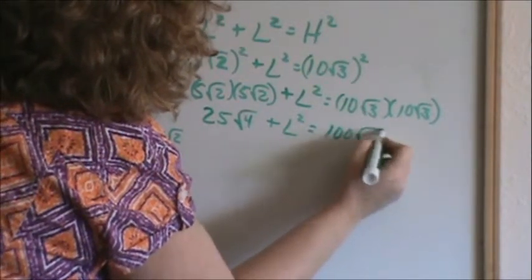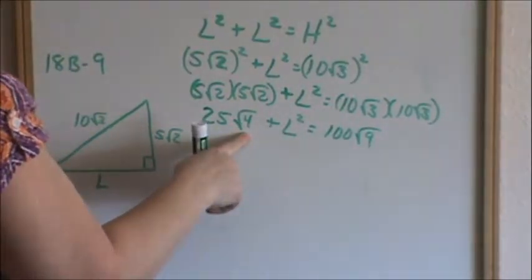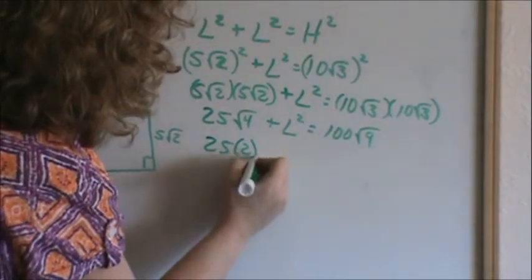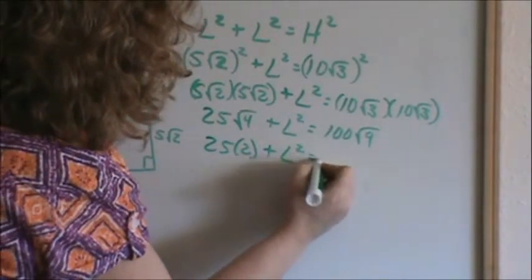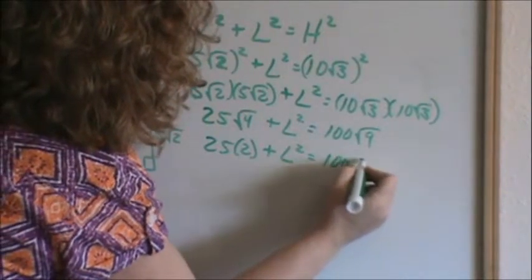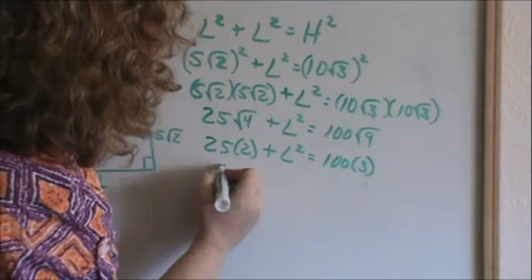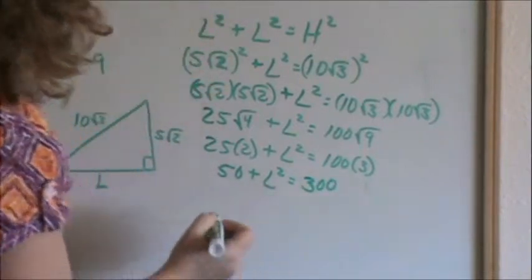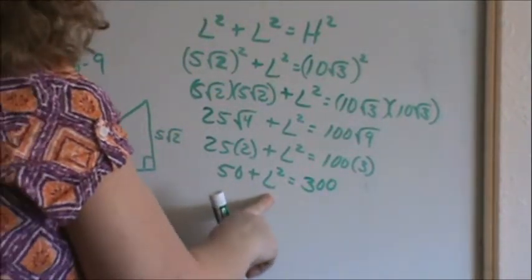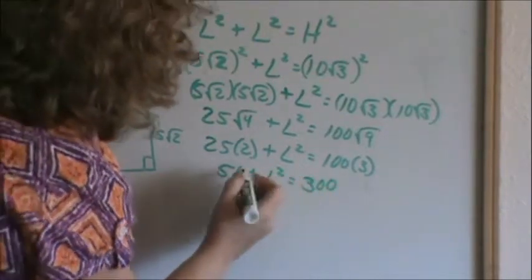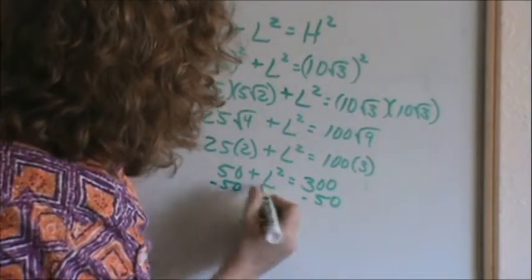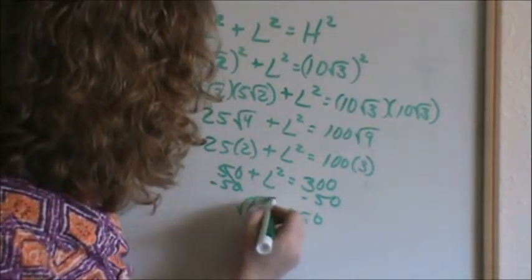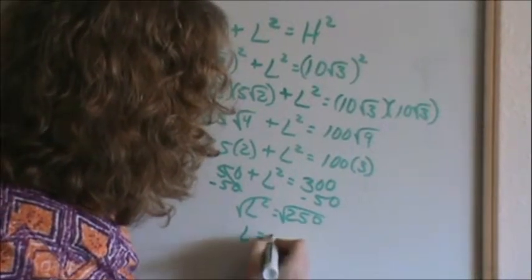Square root of 2 times square root of 2 is square root of 4. Square root of 3 times square root of 3 is square root of 9. Now you need to simplify your radicals. This means 25 times square root of 4 — square root of 4 is 2, so we have 25 times 2. 100 times square root of 9 is 100 times 3. So now we have 50 plus leg squared equals 300. I'm trying to solve for leg squared, so I need to get my numbers on one side and variables on the other using algebra. So, leg squared equals 250. I've got to take the square root of both sides. L equals the square root of 250.